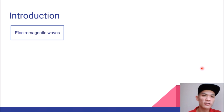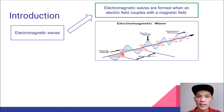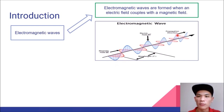First of all, I would like to start with electromagnetic waves. Electromagnetic waves are formed when an electric field couples with a magnetic field. As you can see here, the blue line indicates the electric field and the red line indicates the magnetic field. The electric field and magnetic field are perpendicular to each other and to the direction of the wave.